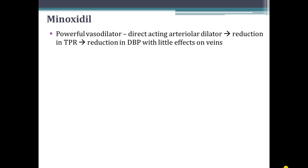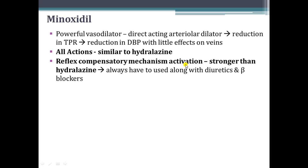The next drug is minoxidil. It is a powerful direct acting arteriolar dilator drug that causes reduction in total peripheral resistance, leading to reduction in diastolic BP with little effect on the veins. All other actions are similar to hydralazine. It causes reflex compensatory mechanism activation that is stronger than with hydralazine, which is why minoxidil is less preferred. It always has to be used along with a diuretic or beta blocker — beta blockers reduce sympathetic overactivity and diuretics remove the excess fluid from sodium and water retention. Whenever minoxidil is given, it is always given in combination with diuretics or beta blockers.